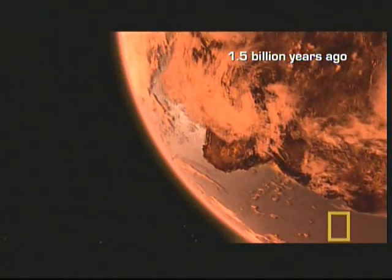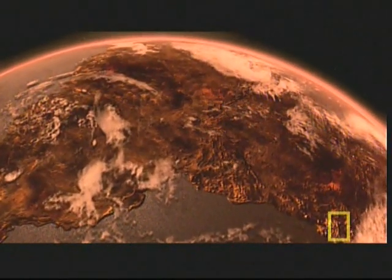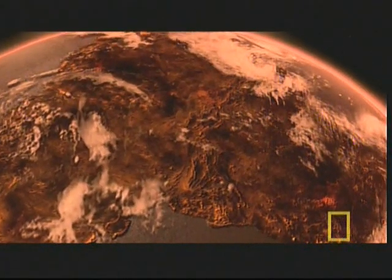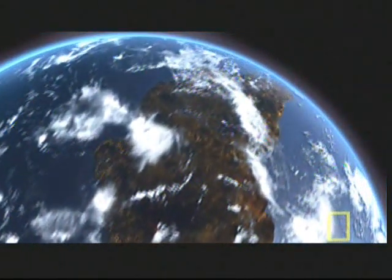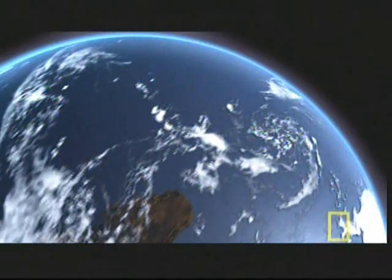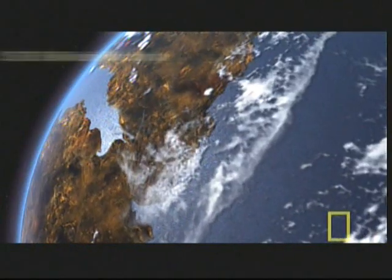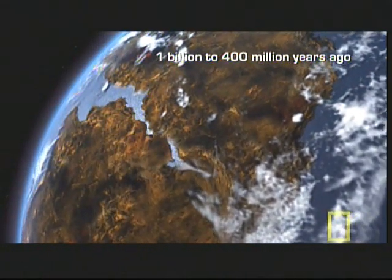The continents roamed separately until about 1.8 billion years ago. Arctica collided with what is now eastern Atlantica to form Nuna. Then Nuna, Atlantica, and Ur collided 1 billion years ago, forming the supercontinent Rodinia.